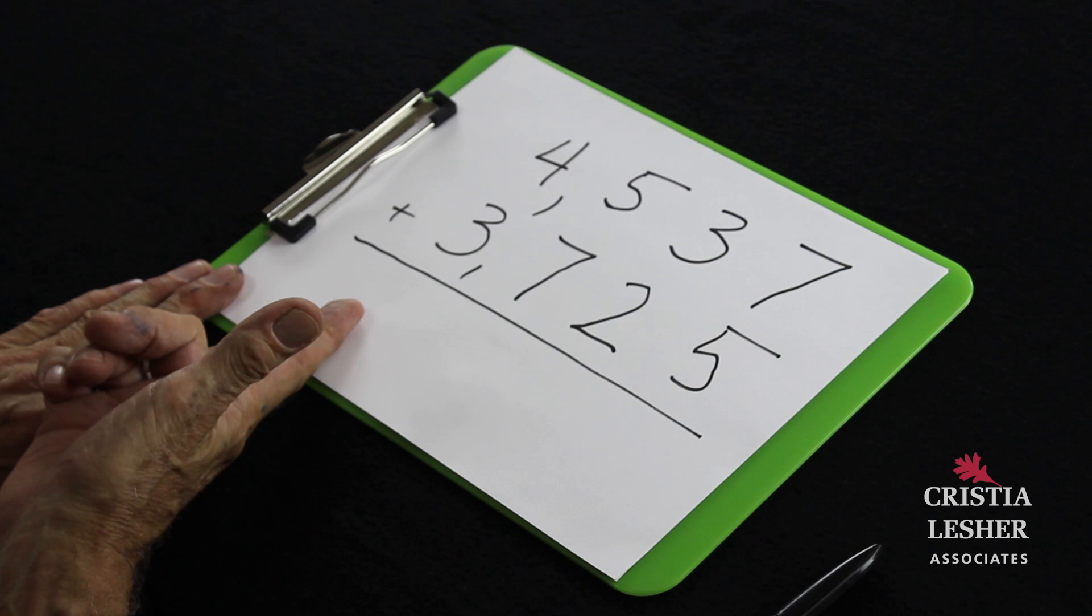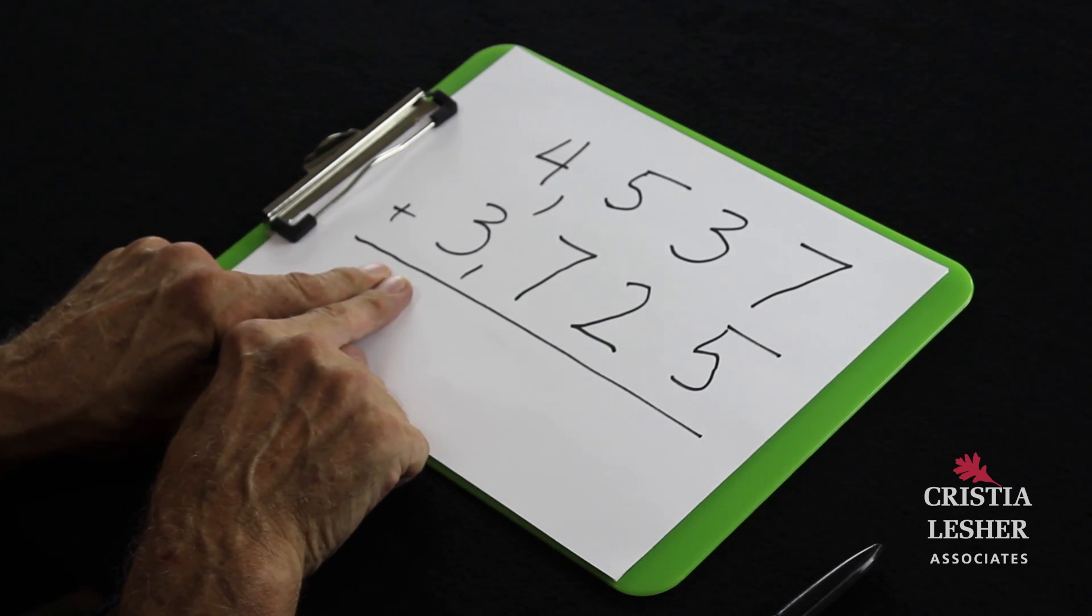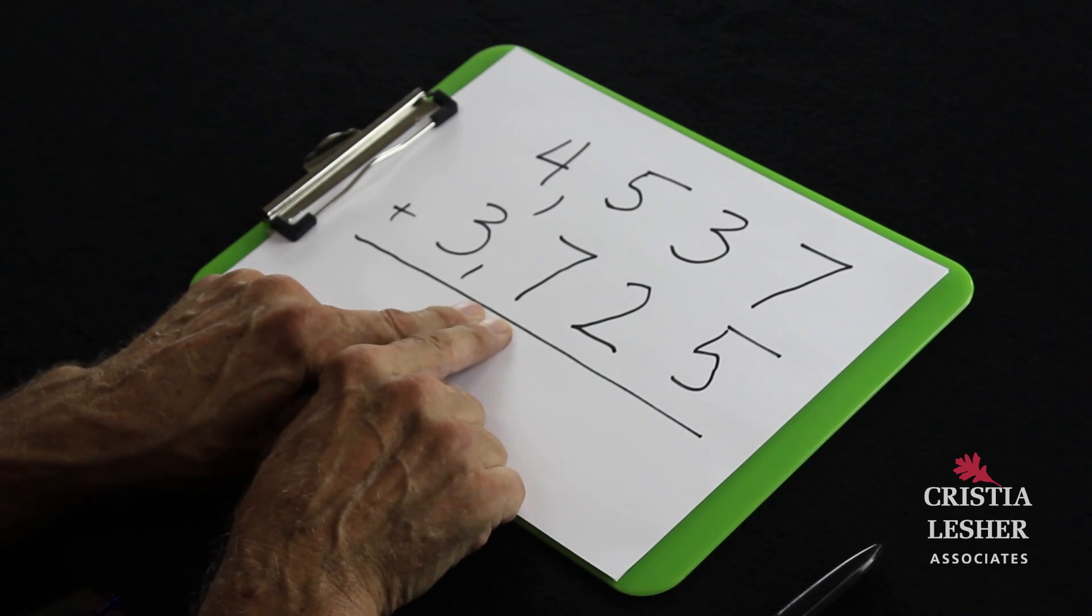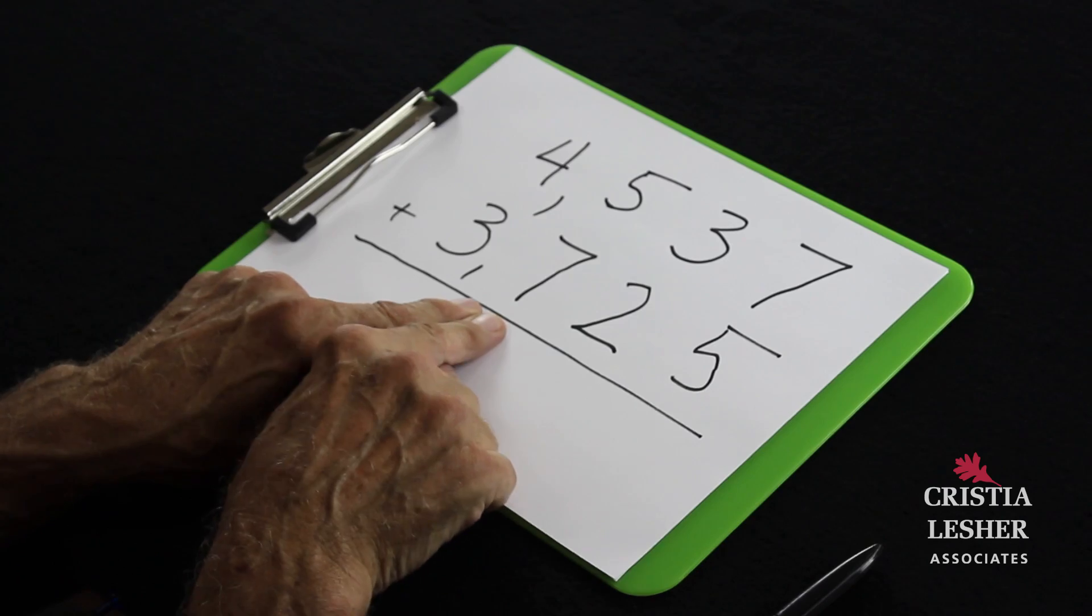Again, when I add them I'm going to start adding with the thousands. I'm going to count to see how many thousands there are, but before I write it down I'm going to look and see if there's any more hidden thousands in the hundreds column.